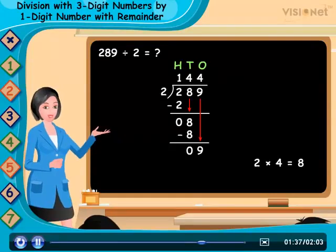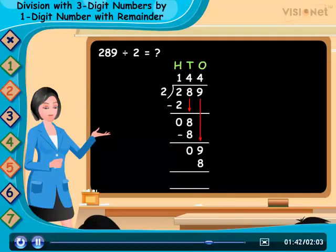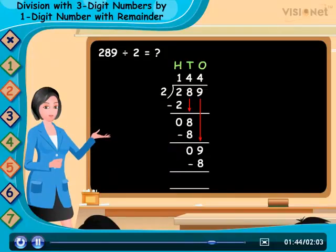So, write 4 in the ones place of quotient and write 8 below 9. And subtract 9 minus 8 which gives 1.